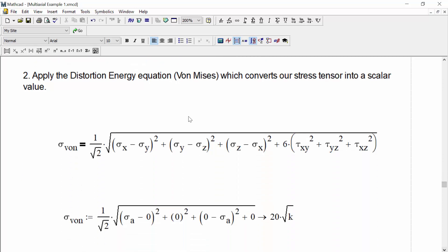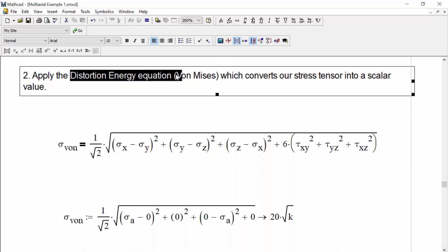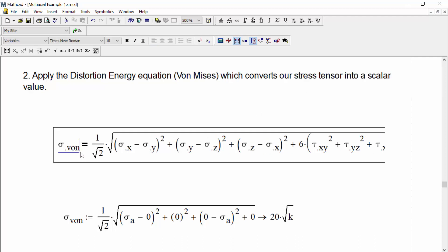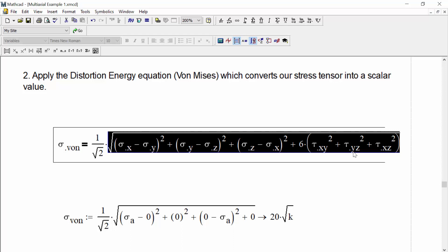Let's then apply the distortion energy equation, meaning von Mises' equivalent stress, which converts our stress tensor into a scalar value. Where the von Mises scalar stress, the scalar von Mises stress, is equal to 1 divided by the square root of 2 times all of our stress terms.